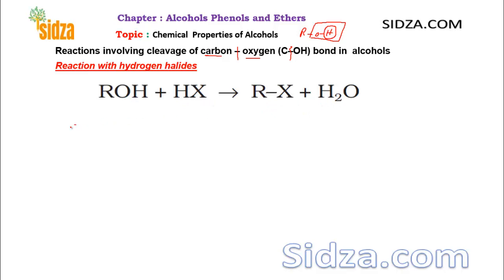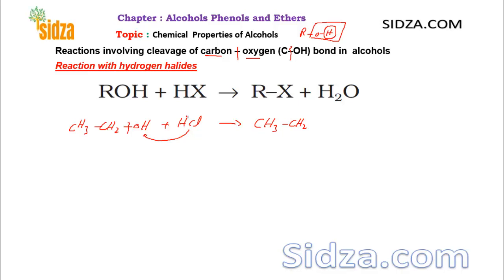Let's take an example. Suppose you have CH₃CH₂OH — ethanol. When you react it with hydrochloric acid, HCl, you get CH₃CH₂Cl. The hydroxyl is replaced by chlorine; the OH reacts with the hydrogen to form water, and chlorine bonds to the carbon. This is a nucleophilic substitution reaction, and water is the byproduct.